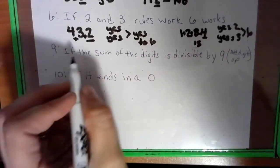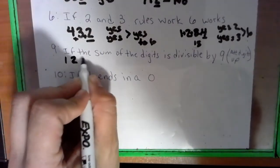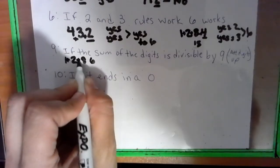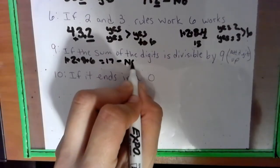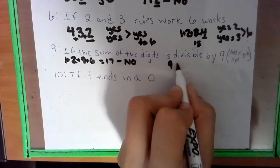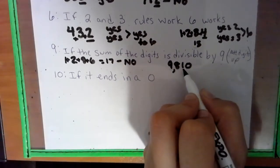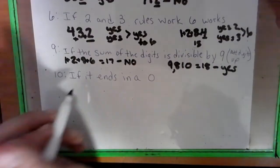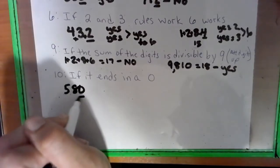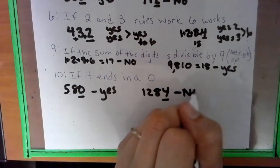Now we look at the nines rule and the tens rule. The nines rule is just like the threes rule, you add up the digits. So if we have 1,286, we add up those digits: eight, nine, 10, 11, 11 and six is 17. So that would be a no. Let's do 9,810. Nine plus eight is 17, plus one is 18. Can nine go into 18? That would be a yes. Numbers are divisible by 10 if it ends in a zero. If it doesn't end in a zero, then it's a no.